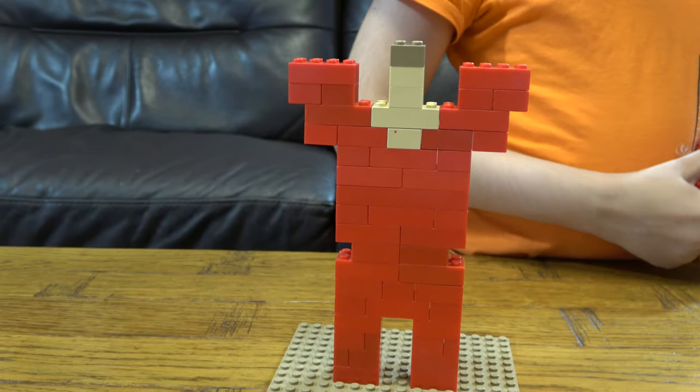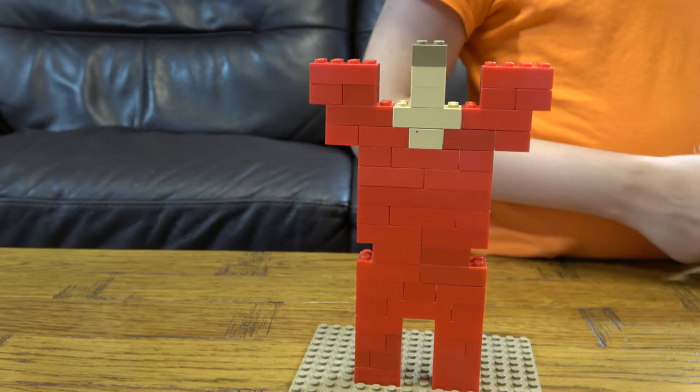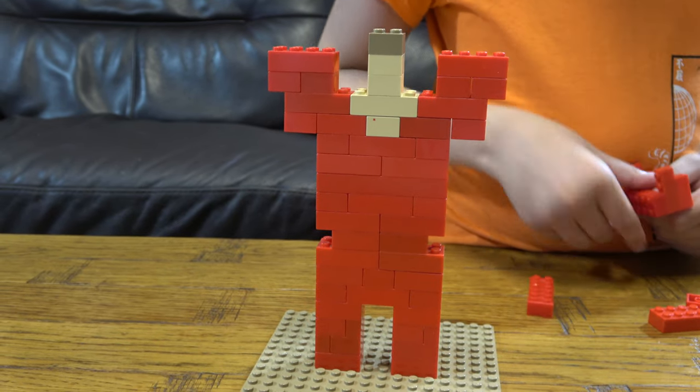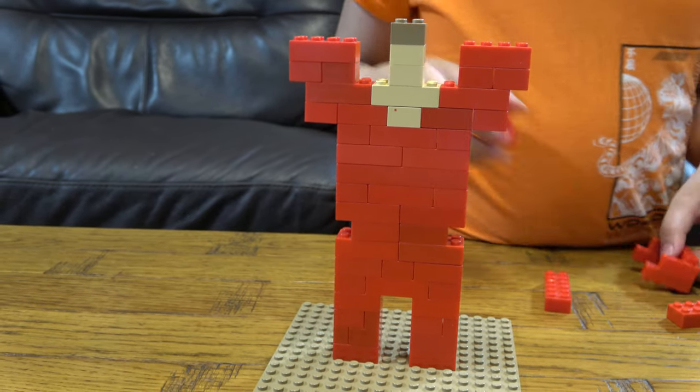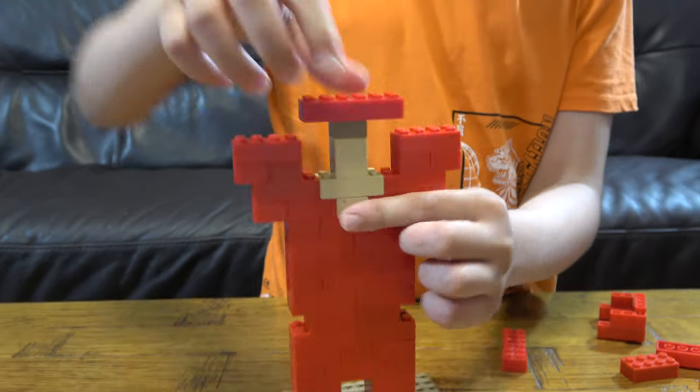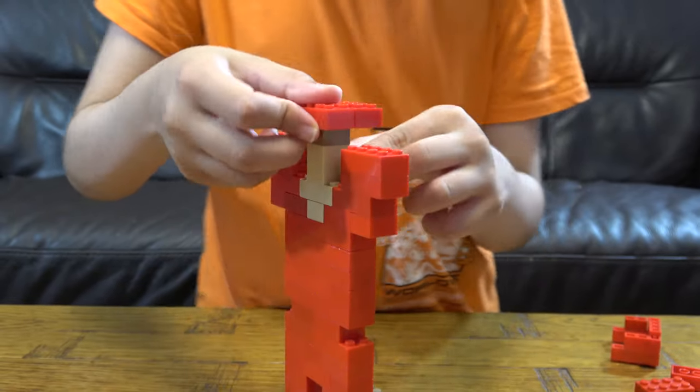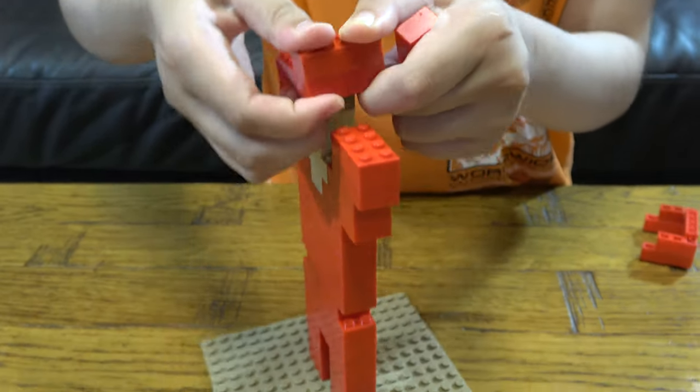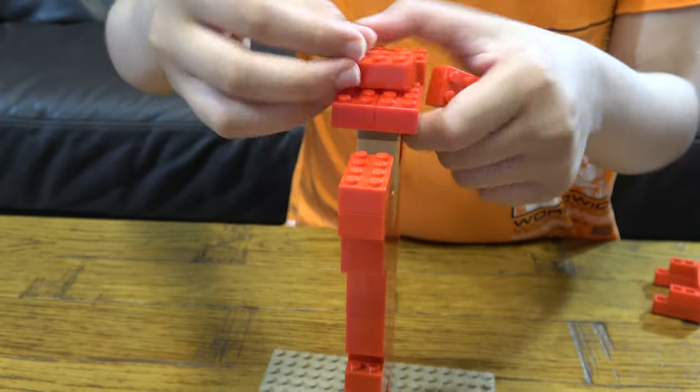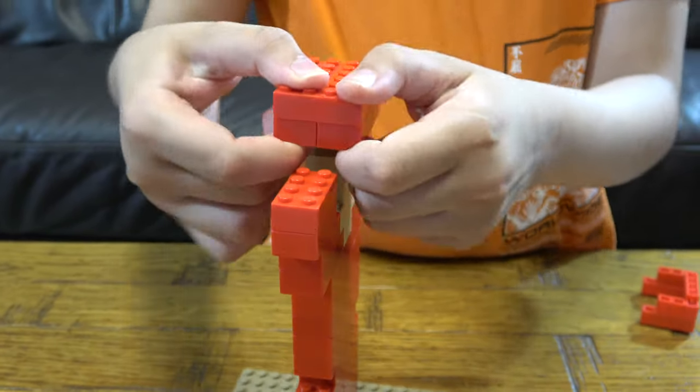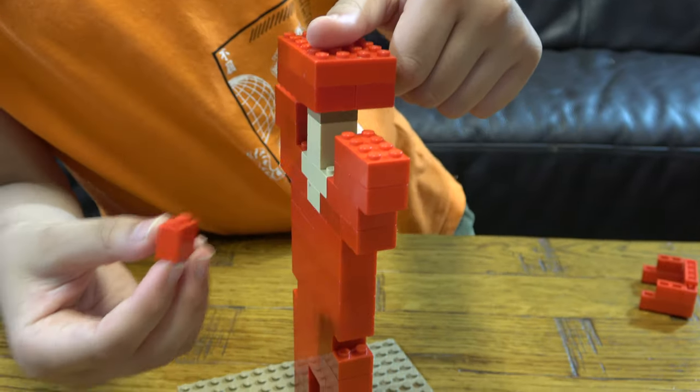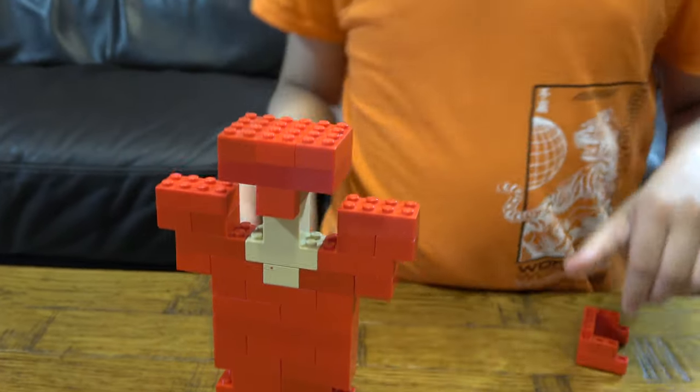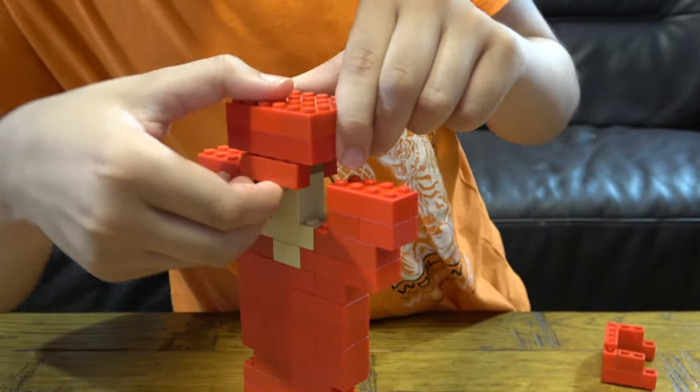First we get these two, put three of them on top of each other like this, and then place this at the front, this at the back.